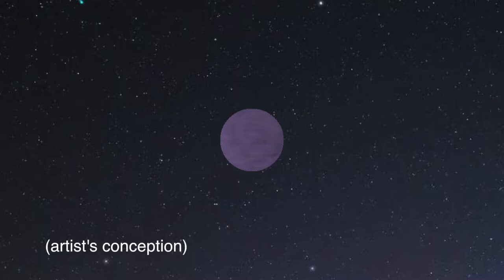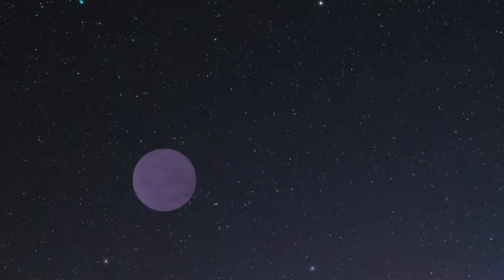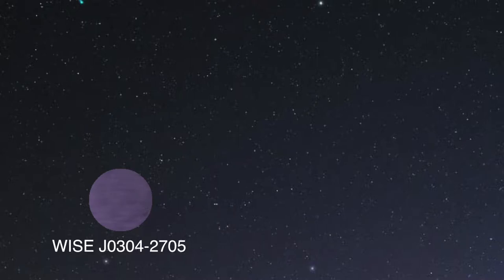Astronomers have discovered an extremely cool object that could have a particularly diverse history. Although it's now as cool as a planet, it may have spent much of its youth as hot as a star. Called WISE J0304-2705, the object is a member of the recently established Y-Dwarf class.